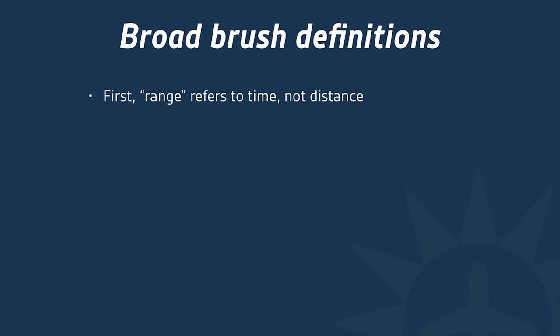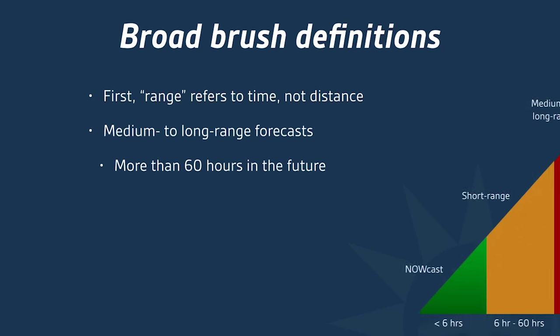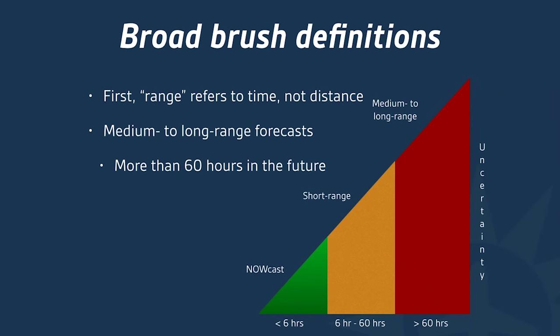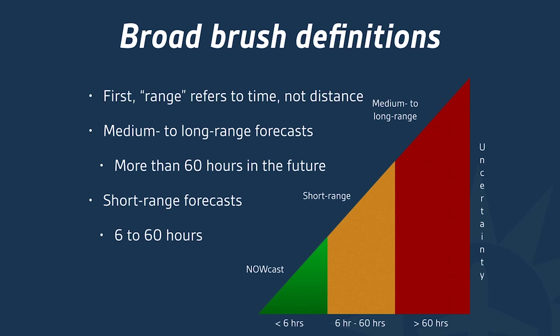I'll start out with a few broad-brush definitions. Whenever I say range, I mean time and not distance. A medium to long-range forecast is a forecast valid more than 60 hours in the future. A short-range forecast is valid somewhere between six to 60 hours. A now-cast is valid less than six hours from now. And as you can see on the chart, as you get further out in time, uncertainty increases.